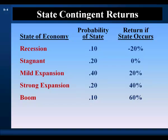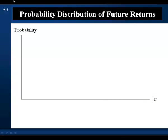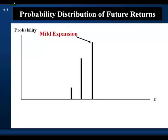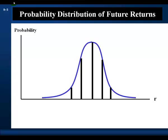So if we can list all possible future states of the world, determine their probabilities, and assign state-contingent returns to each future state of the world, we can assign a probability distribution of possible future returns to the security. Let's plot the probability distribution in probability-return space. Of course, there are many more possible future states of the world, and as we add more states, the distribution approaches a continuous distribution.